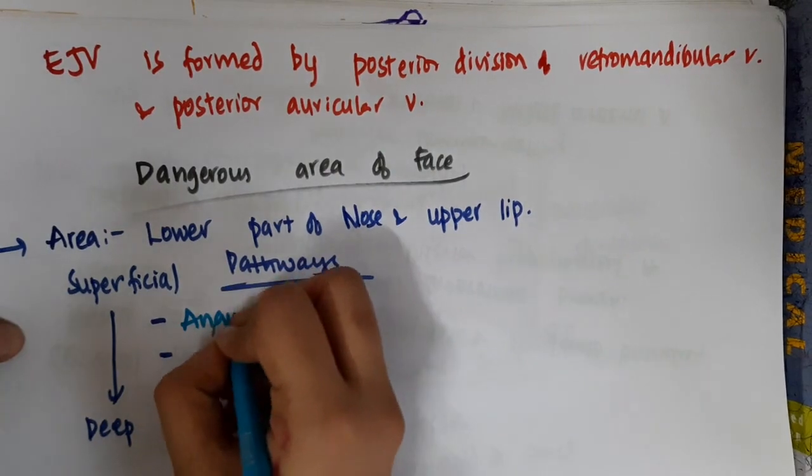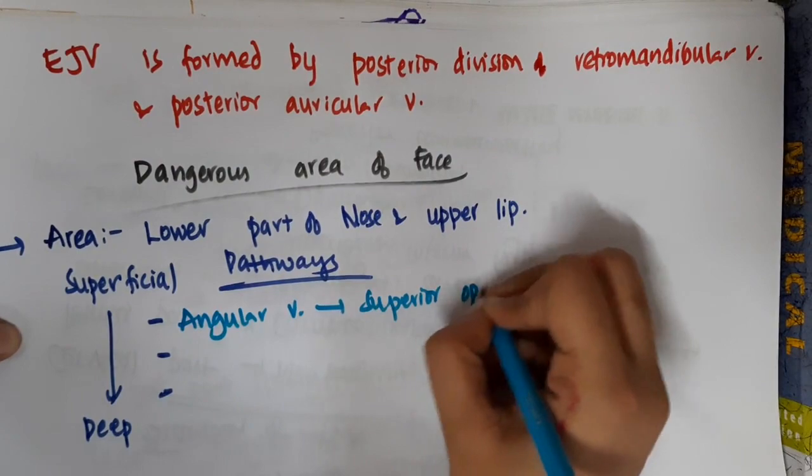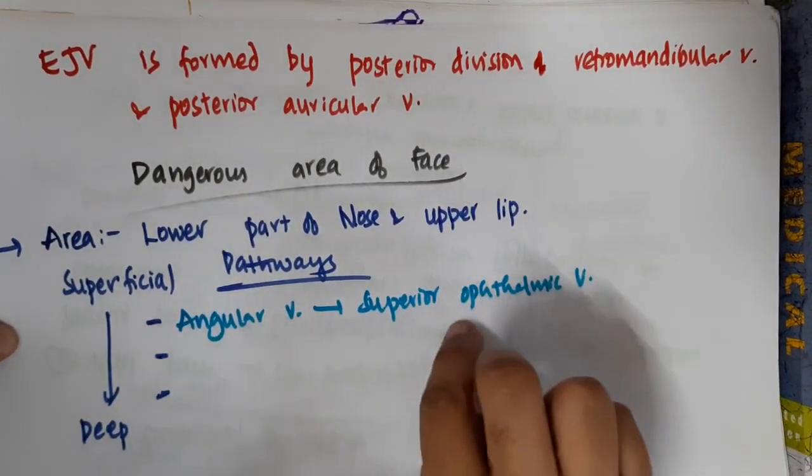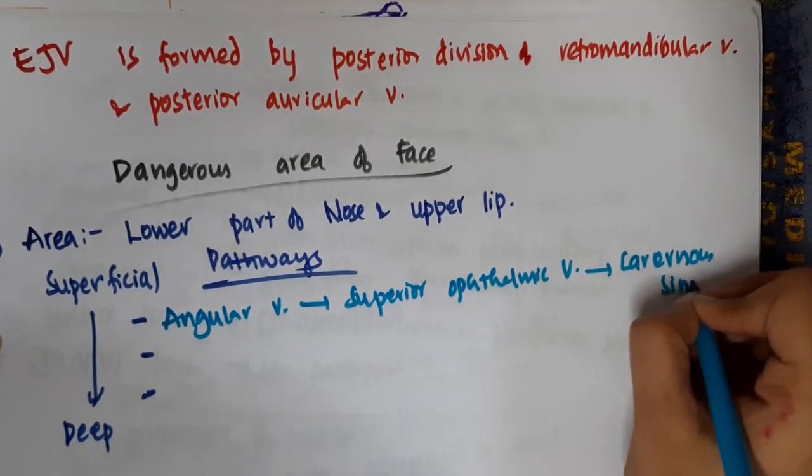First, through angular vein to superior ophthalmic vein. The blood flows from angular vein to superior ophthalmic vein, and then to cavernous sinus.